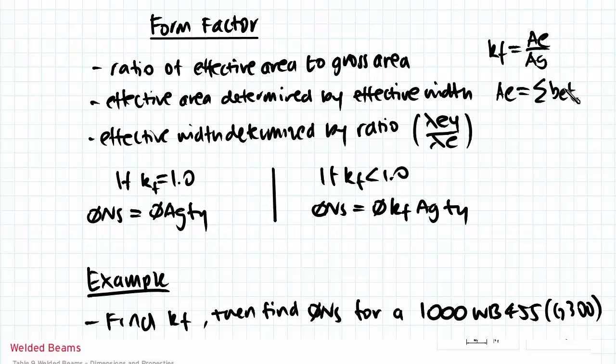The effective width is determined by the ratio of slenderness yield limit and plate slenderness. So be equals the ratio of slenderness yield limit over plate slenderness times B, where this term has to be less than B.